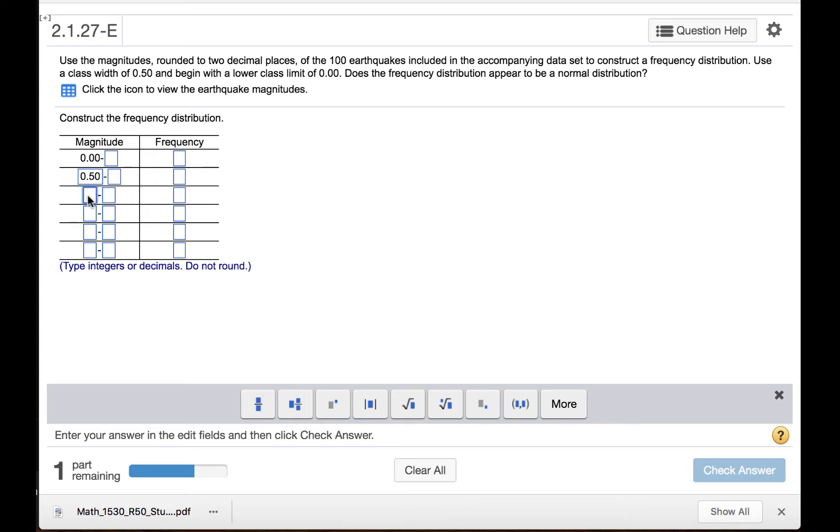Now continue down and add 0.5 again. This would be 1, and then 1.5, 2, 2.5.